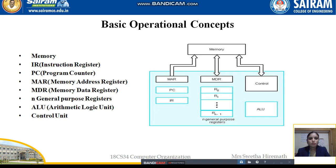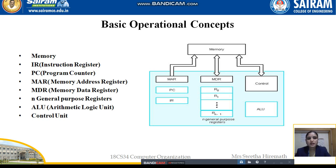If we write any program — for example, a C language program — once we have written it, we have to save it before executing. Once saved, it will be stored in the memory. An address will be allocated to each and every instruction of the program, and that address will be used for further executions.